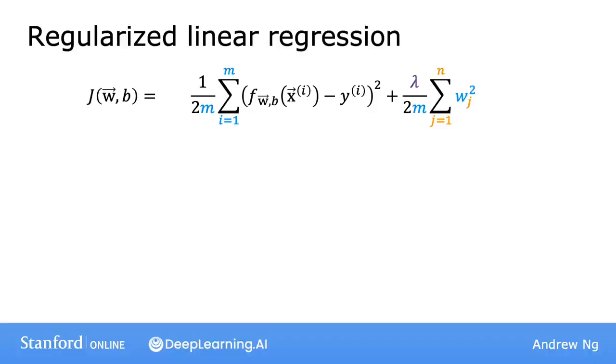Here's the cost function we've come up with in the last video for regularized linear regression. The first part is the usual squared error cost function, and now you have this additional regularization term, where lambda is the regularization parameter. And you'd like to find parameters w and b that minimize the regularized cost function.